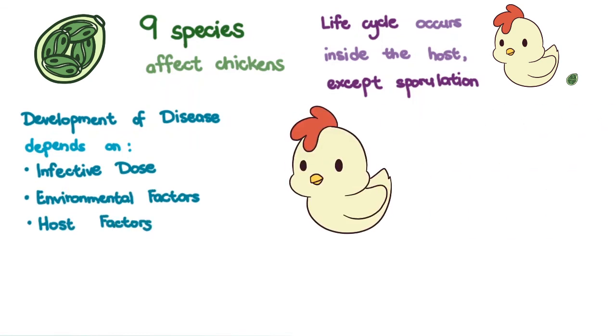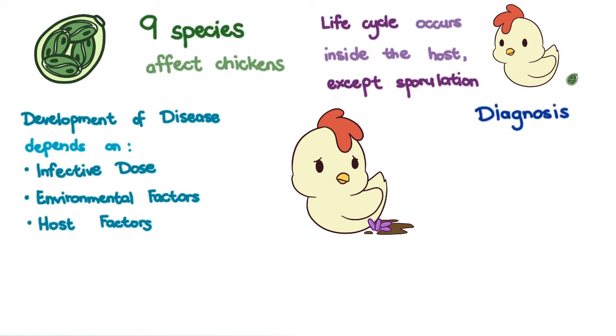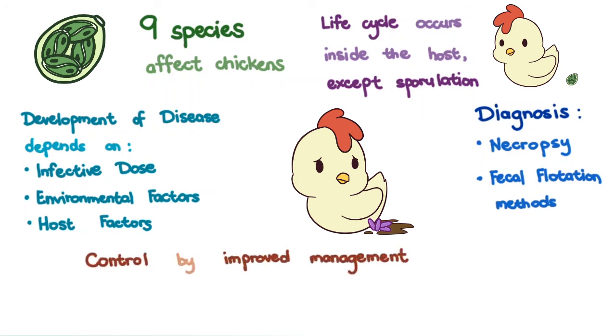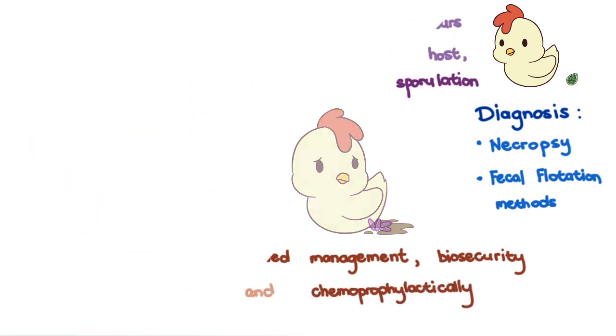Clinical signs include severe diarrhea and production losses. Necrotic enteritis can occur secondary to coccidiosis. Diagnosis is through necropsy and fecal flotation methods. Control is done through improved management, biosecurity measures, and chemo-prophylaxis.